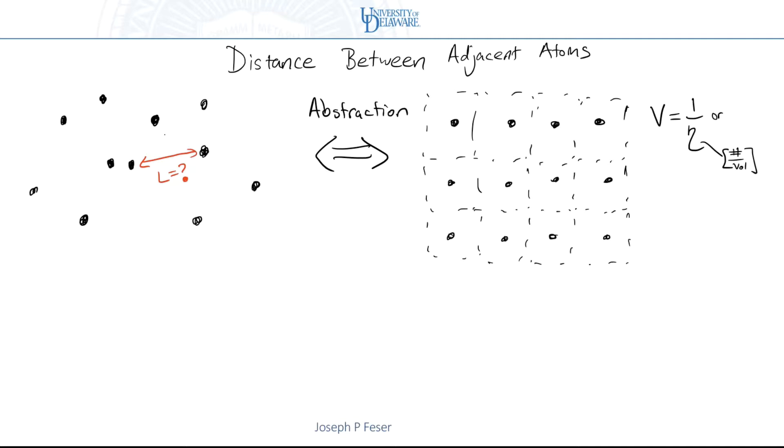Or in other words, the length between these things, if all of these boxes have the same dimension, is one over eta... wait, I shouldn't write it that way. Let me move this up a little bit. The length between adjacent cells would be one over eta to the one third, right? The cubed root would give me the distance between each one of those boxes. And that's really the number that I'm after.